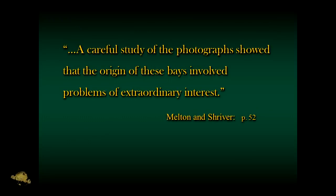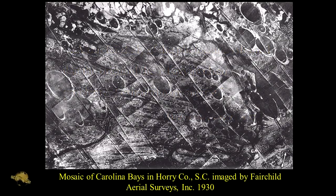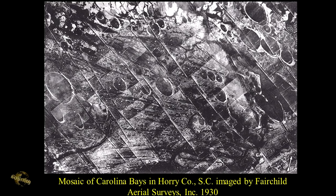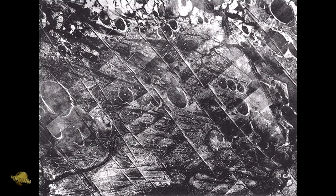Melton and Shriver were the first two geologists that investigated the bays and said that a careful study of those photographs showed the origin of these bays involved problems of extraordinary interest. This is a reproduction of the aerial mosaic that Edwin H. Corlett put together in the New York office back in 1930. You can see dozens of them on this mosaic - not only the elliptical shape, but the fact that the ellipses are all pretty much aligned parallel with one another.